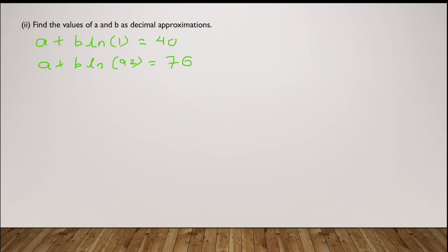Now in the second part of FRQ2, they will ask you to find the values of a and b as a decimal approximation. Now if you notice the first equation, what is ln of 1? To what power can you raise e, the rational number, to get to 1? And we all know that if we raise any real number to the power 0, then we would get 1. So this would essentially be a plus b times 0, since ln of 1 is 0, equals 40. And b times 0 is 0, so we get a is equal to 40.